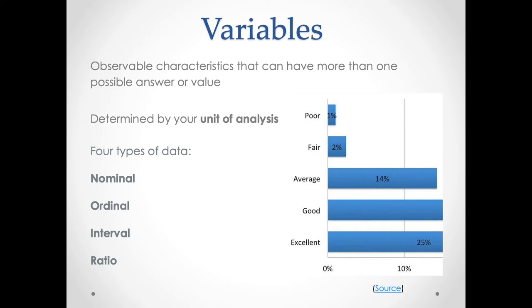In addition to units of analysis, we have units of observation — what we actually look at — and these are intimately tied to variables. A variable is an observable characteristic that can have more than one possible answer or value. This is essential: a variable has to vary. Values of the variable have to change; you need multiple values of the thing. In order to generate an explanation, you need to observe co-variation — two things changing together.